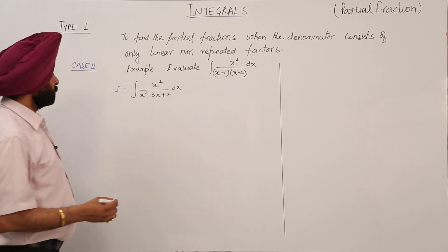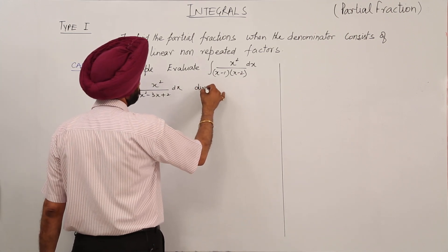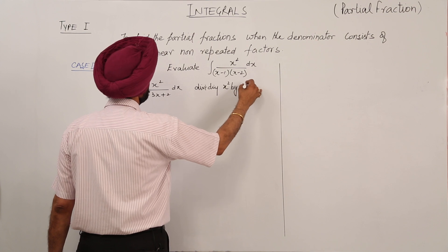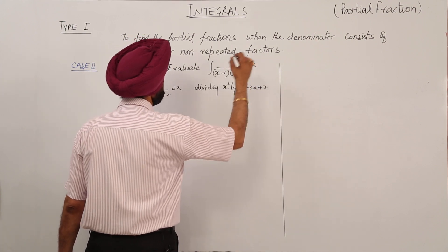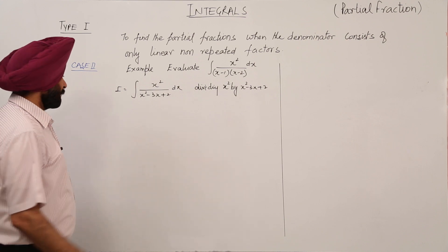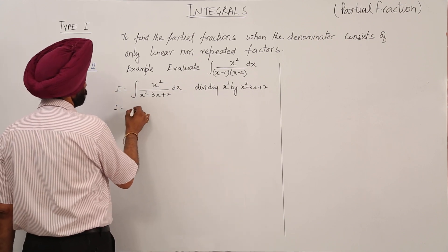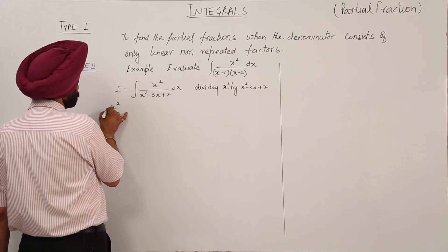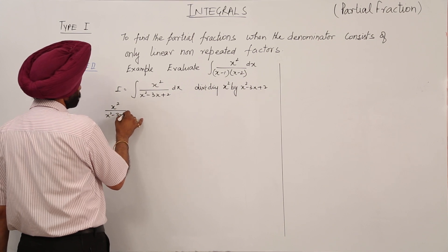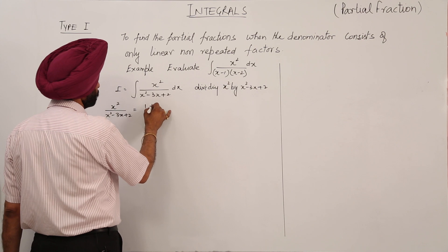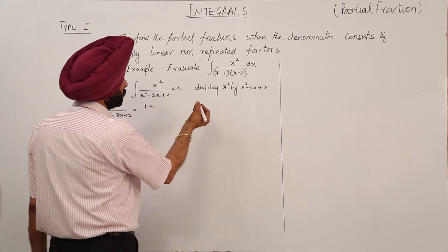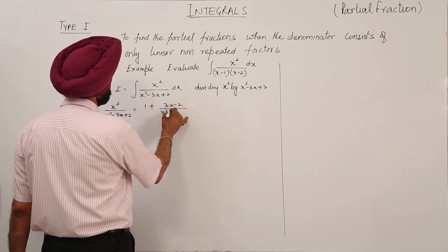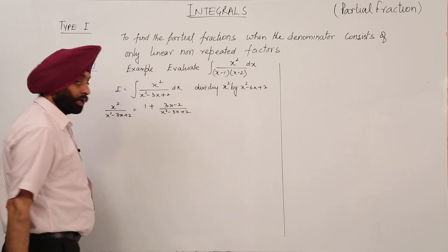The degree of the numerator and denominator is the same, so we need to perform polynomial long division. Dividing x² by (x² - 3x + 2), we find that x² divided by (x² - 3x + 2) equals 1 plus a remainder term after division.